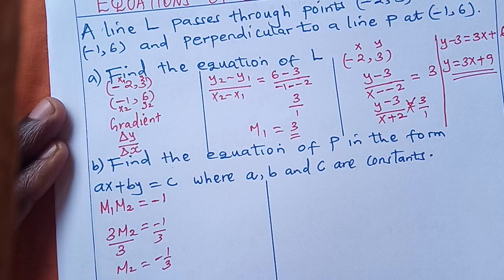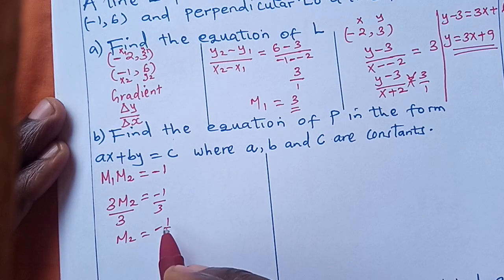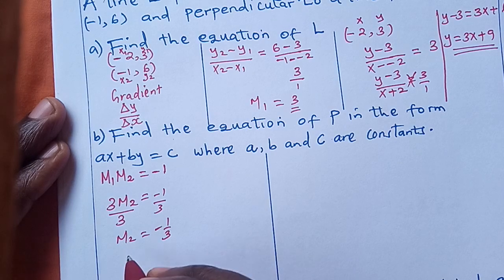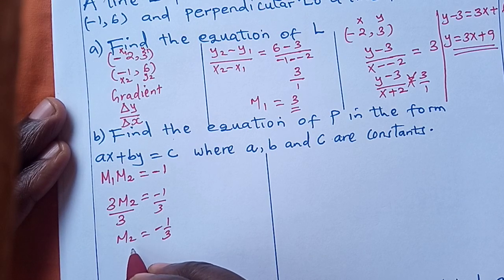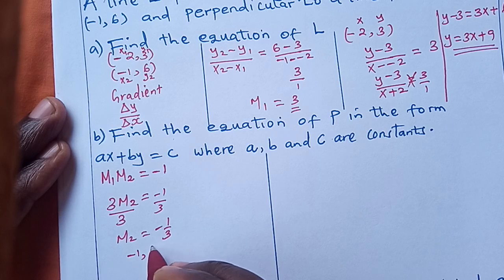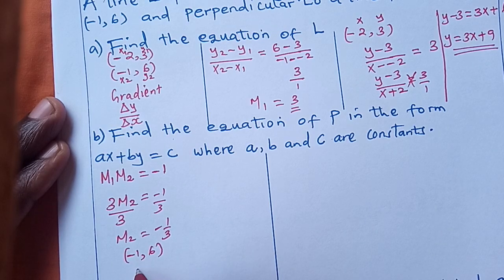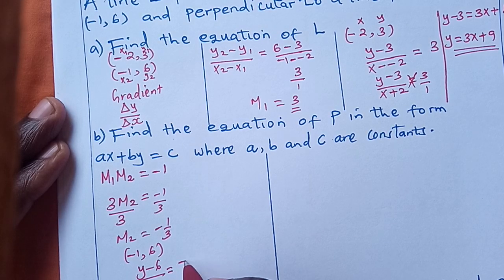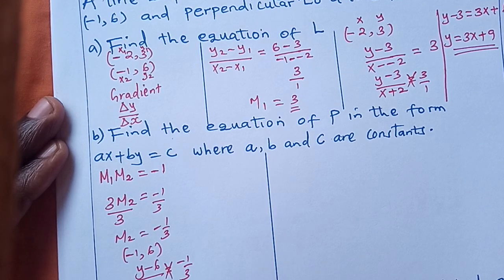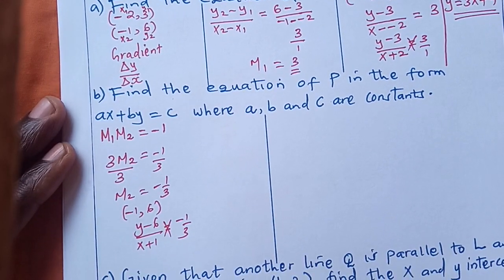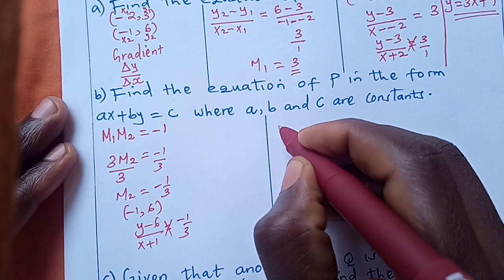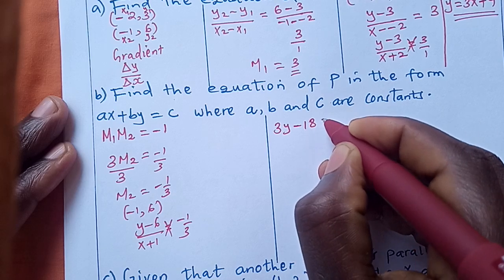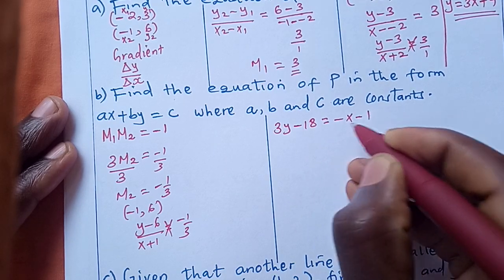This is the second gradient, and we use this gradient and the point (-1, 6) to get the equation of line P. We say (y - 6) / (x + 1) = -1/3. Cross multiplying, we get 3y - 18 = -x - 1.